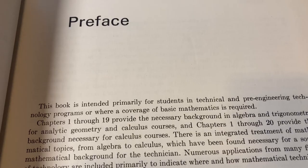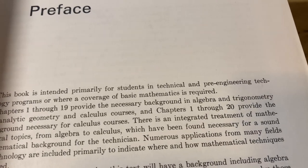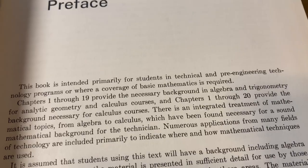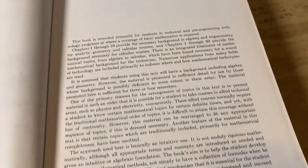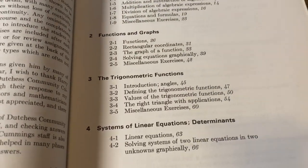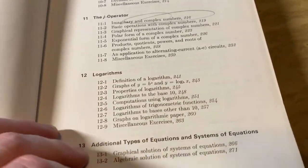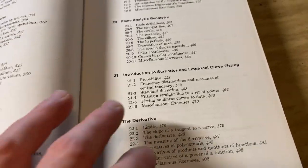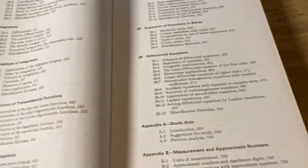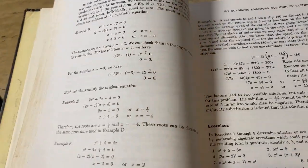The book does take a unique approach to teaching calculus. It says here, this book is intended primarily for students in technical and pre-engineering technology programs or a coverage of basic mathematics is required. So this book does not assume any trigonometry. In fact, it teaches you trigonometry. Another comparable book with a slightly different target audience would be a business calculus book. Something like that would be kind of like this, but it wouldn't have as much other mathematics. This has a lot of other mathematics besides calculus. So you're getting all kinds of knowledge when you get a book like this.